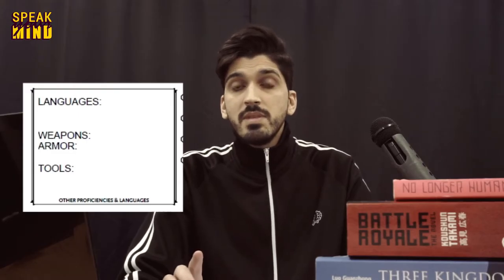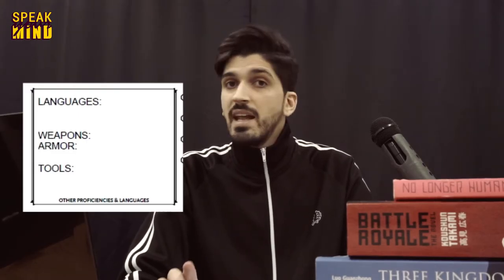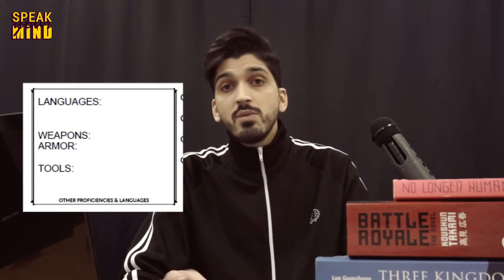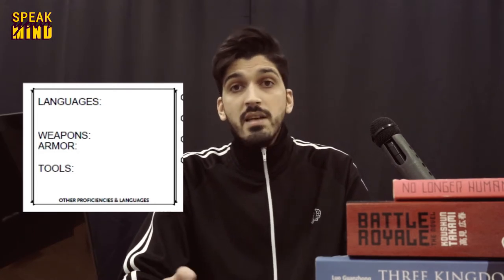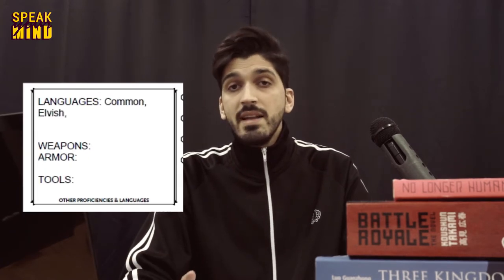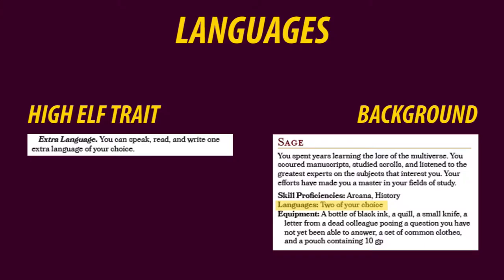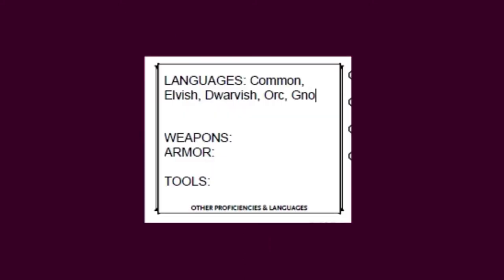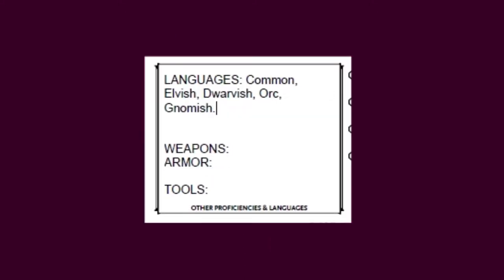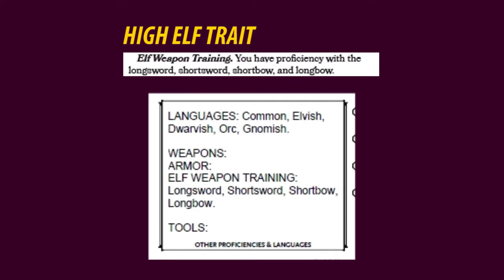Underneath the passive wisdom is the box for other proficiencies and languages. They include languages, weapons, armor, and tools, and come from race, class, and background. Elves speak common and elvish. As a high elf, I can master another language of my choice, and yet two additional languages on top of that because of my sage background. I will pick dwarvish, orc, and gnomish. Because Emanon is a high elf, he is also proficient in longsword, shortsword, shortbow, and longbow.